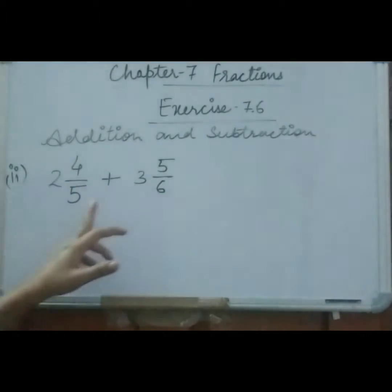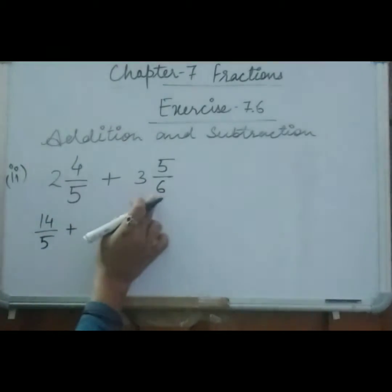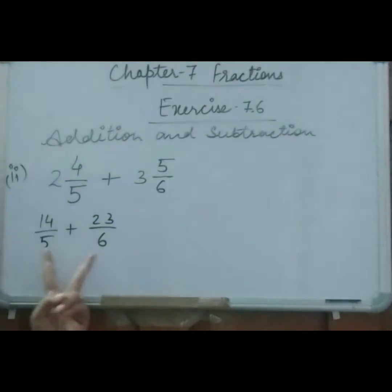2 whole 4 by 5 plus 3 whole 5 by 6. So first of all we will convert them into improper fraction. 5 times 2 is 10 and plus 4 is 14 by 5. And this one 3 times 6 is 18, 18 plus 5, 23 by 6. Now what we have to do? We will just make them like fractions. So how we will make them like fractions? By taking LCM.